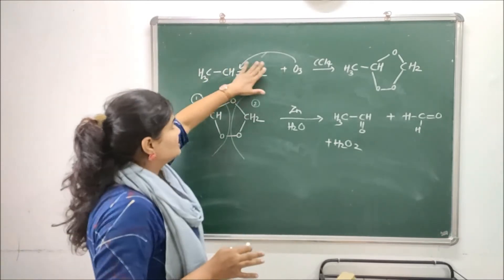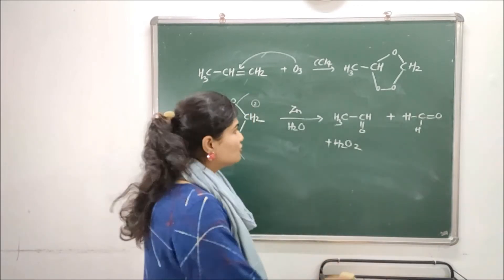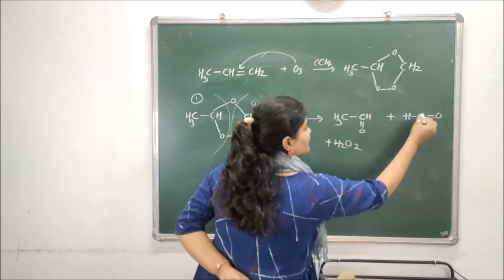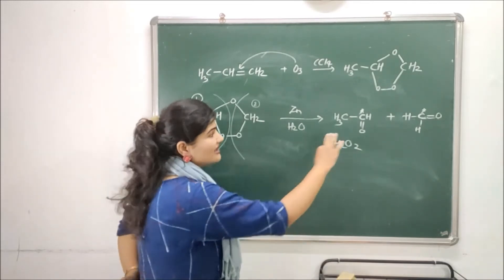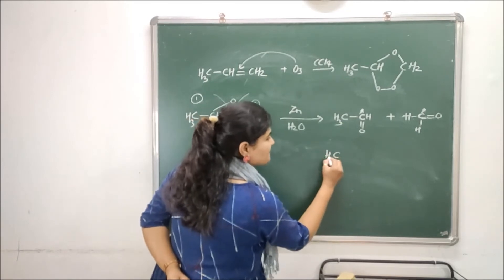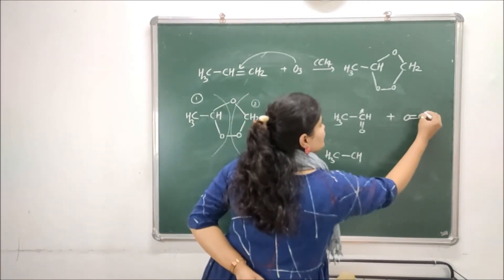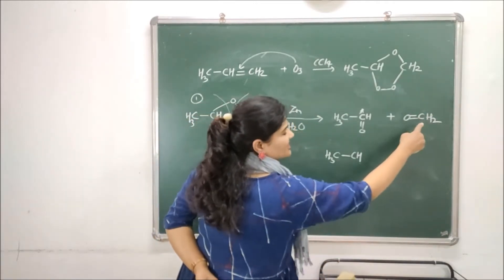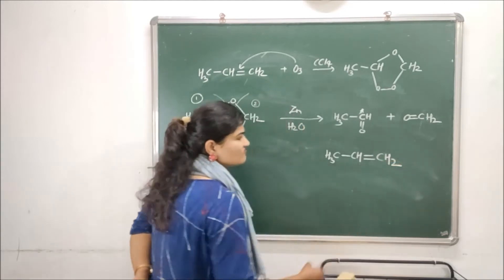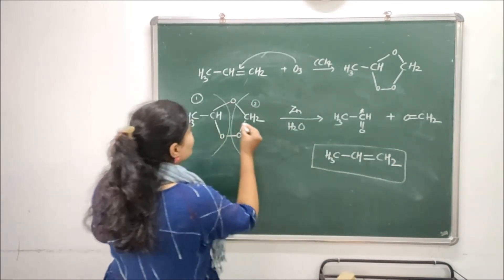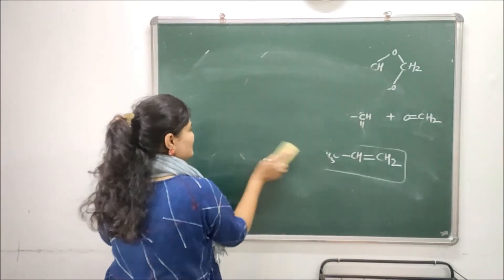Now, how do we predict the position of a double bond in unknown alkenes? Suppose I don't know the original structure, but after ozonolysis I have derived these two product structures. I find which carbon is oxygenated in each molecule and blindly put a double bond connecting those two carbons. Combining CH₃-CHO and HCHO, I join the oxygenated carbons with a double bond and recover CH₃-CH=CH₂, which is our original substrate propene.